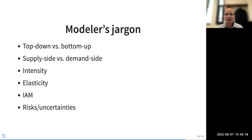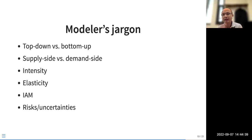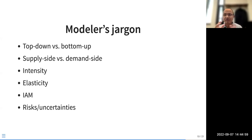Here are some modeler's terms. You have top-down versus bottom-up approaches. Top-down uses population and key socio-economic indicators to project future energy demand without fully incorporating all the individual drivers. Bottom-up is much more detailed, using technology stock turnover — the inventory of energy-consuming appliances — to build up energy projections from the ground level.